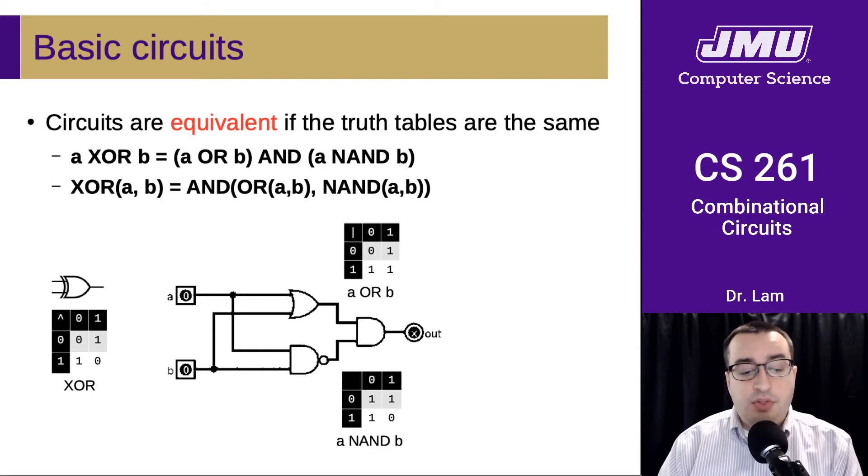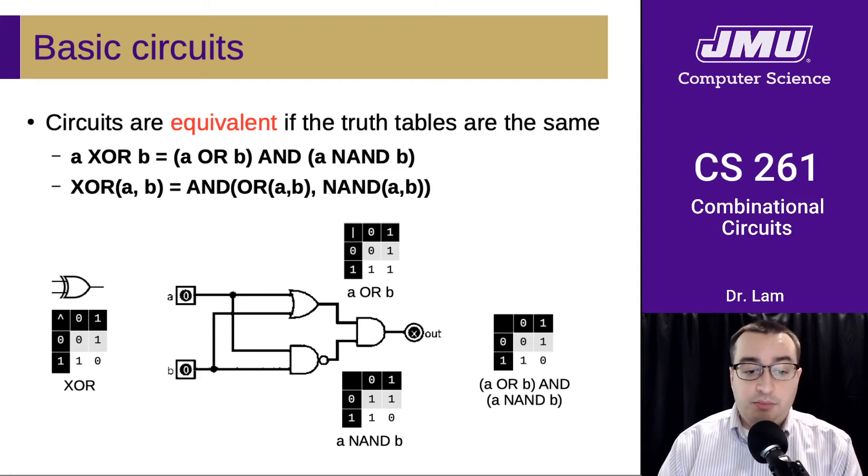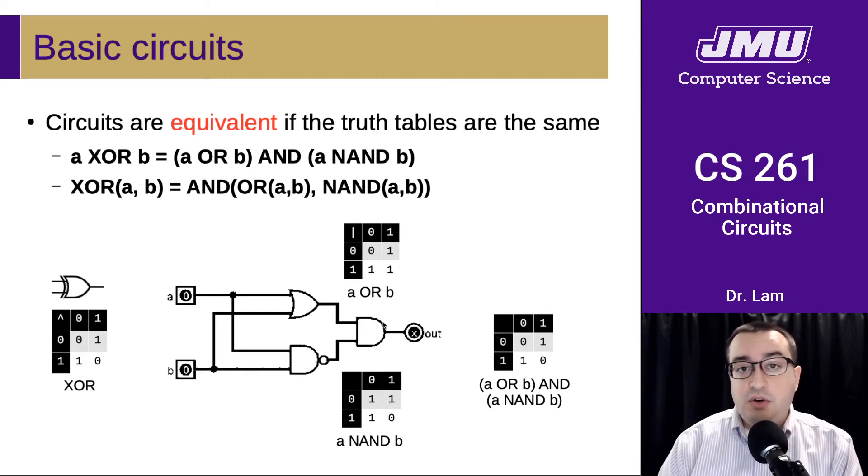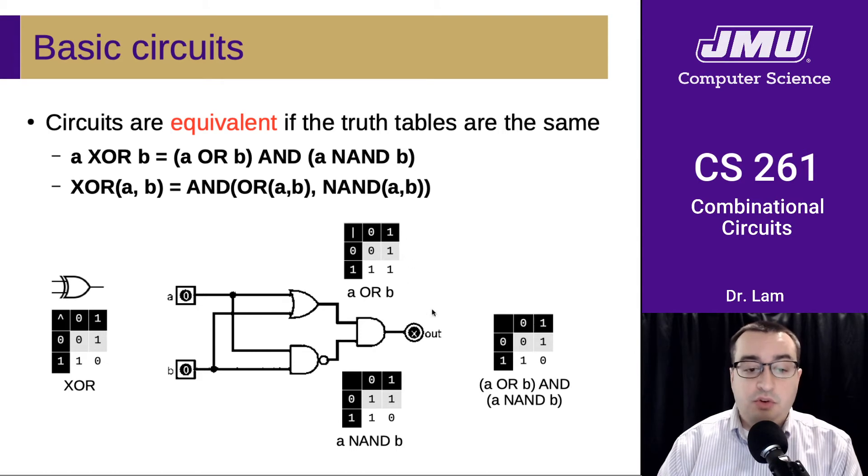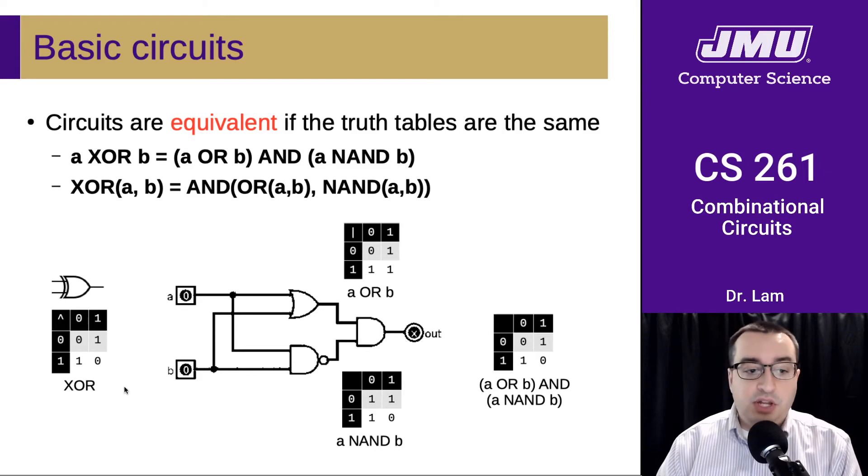So this is what the outputs look like. This is the truth table for A or B. This is the truth table for A NAND B. So then if we put that together and we put it through another AND, we're basically only going to get ones in the places where both of these truth tables have ones, which is going to be here and here. And of course, that matches our truth table for XOR.